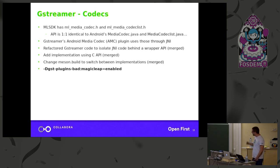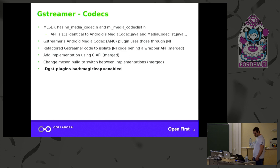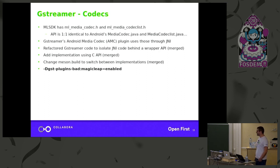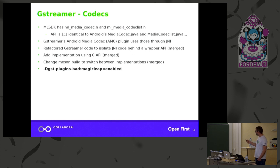Those patches are already merged into GStreamer master, so they're coming in the 1.18 release. To enable it, you pass an extra option to Meson to enable the Magic Leap option in gst-plugins-bad, which selects the new implementation for the codecs.